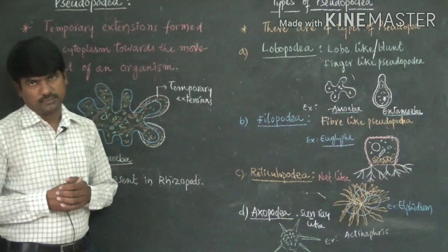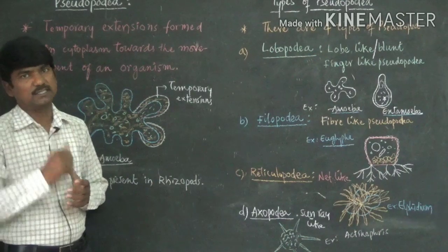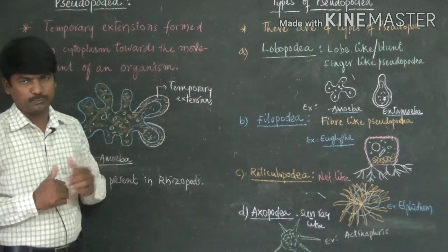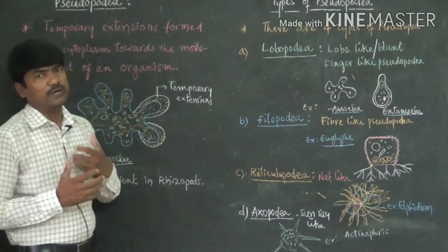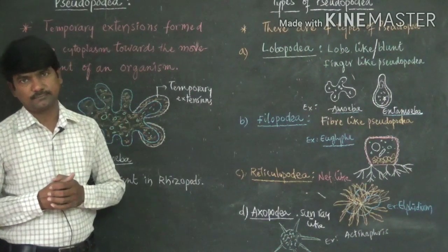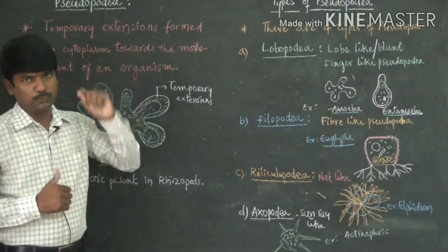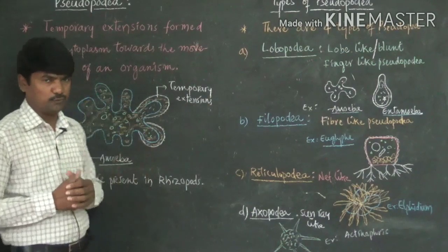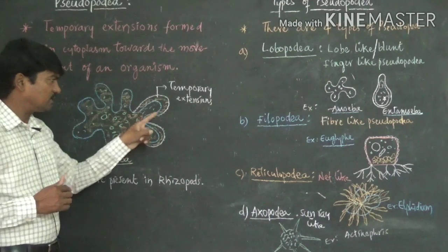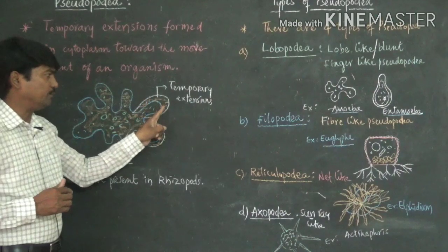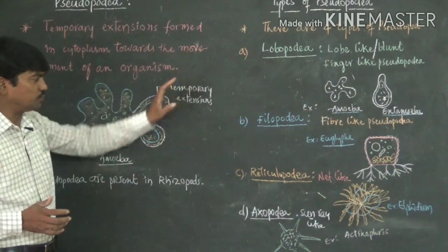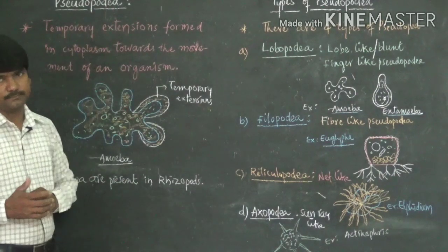In protozoans, there are various types of locomotory organelles. One specific character is called pseudopodia, which also acts as a locomotory organelle. Pseudopodia are the temporary extensions formed in the cytoplasm towards the movement of a living organism. For example, in an amoeba, when it wants to move to the left side, the cytoplasm pushes and forms temporary extensions — these are called pseudopodia.